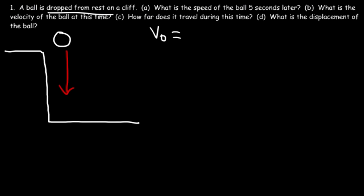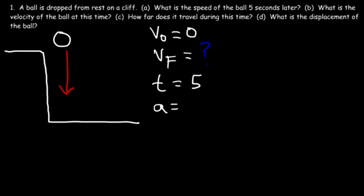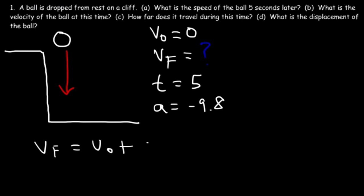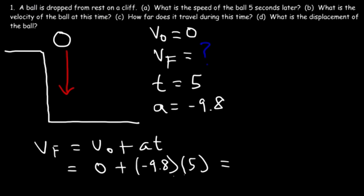The ball is dropped from rest, so the initial speed is zero. Our goal is to find the final speed. The time is five seconds and the acceleration due to gravity is negative 9.8 - negative because it's in the negative y direction. The equation we need is: v-final equals v-initial plus at. V-initial is zero, acceleration is negative 9.8, and t is five. Negative 9.8 times 5 equals negative 49.